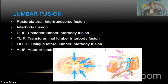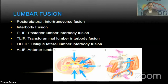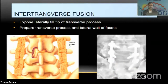Now, how to perform lumbar fusion. In the lumbar spine, fusion can be done as posterolateral fusion — that is intertransverse fusion — or interbody fusion. Interbody fusion options include PLIF (posterior lumbar interbody fusion), TLIF (transforaminal lumbar interbody fusion), OLIF (oblique lumbar interbody fusion), and ALIF (anterior lumbar interbody fusion).